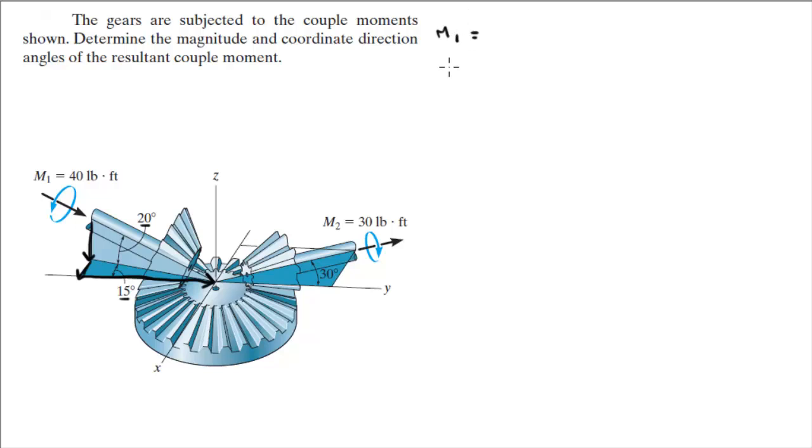So let's work with M1. The first thing that we need to do is find the projection of M1 into the X and Y plane, which is this vector right here, because once we find that vector, we can find the X and Y components. So how do we find that projection? All you have to do is M1 times the cosine of 20 degrees, and that gives you 37.6.